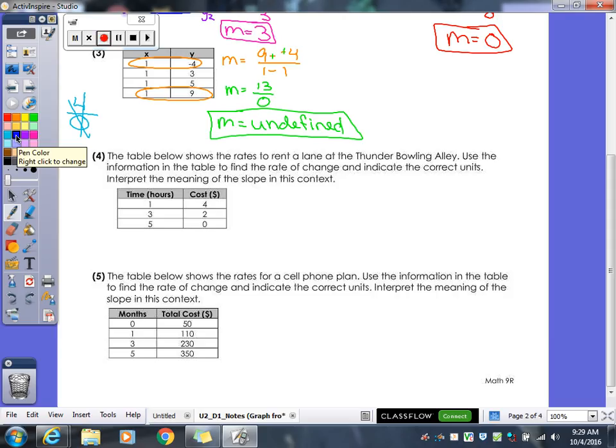The table below shows the rates to rent a lane at the Thunder Bowling Alley. Use the information in the table to find the rate of change and indicate the correct units. Interpret the meaning of the slope in this context. That's a big thing right there. In this context. They love to do that now. To give you a word problem, you have to write your answers in context to the problem. So first thing we have to do, however, is we have to find the rate of change. Which, if you remember, your rate of change is your slope. So what you have to do is find your slope of your table. So just like we did up above, pick two points. Let's have you go ahead and calculate your slope for this. Hopefully you got a slope of negative one. Everybody get a negative one? Alright, so we got our first part. Find the rate of change. Check.